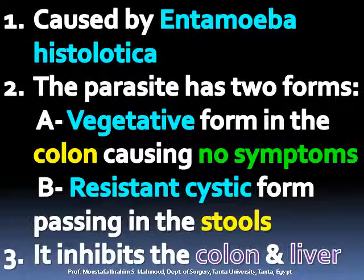The parasite has two forms: a vegetative form in the colon causing symptoms, and a resistant cystic form passing in the stool. It inhabits the colon and the liver.